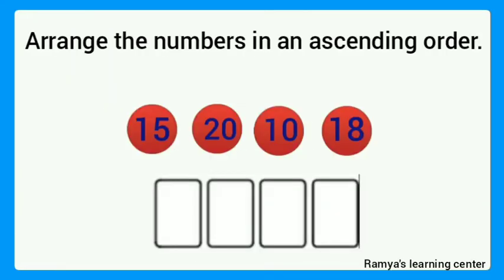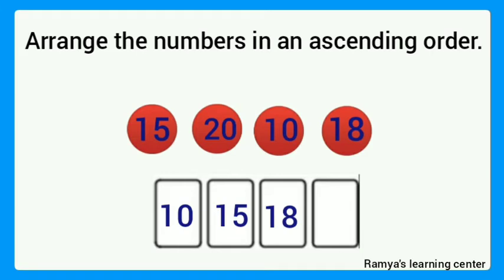Next, do some worksheet. Arrange the numbers in an ascending order. The given numbers are 15, 20, 10, and 18. We want to arrange these numbers in an increasing order. Which is the smallest number? 10. Next number will be 15, then 18, and the biggest number is 20.